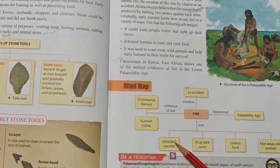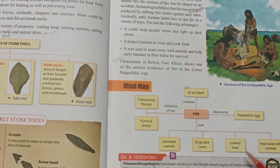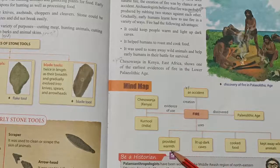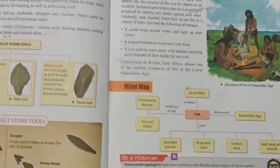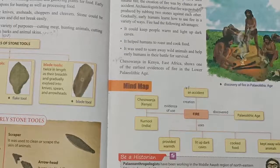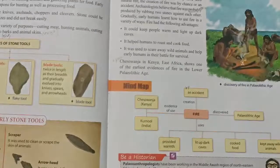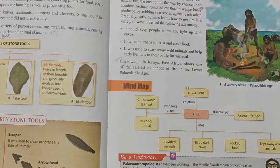To summarize: fire provided warmth, lit up dark caves, helped cook food, and kept away wild animals. These were the uses of fire in the Paleolithic age. Today we have read about the Paleolithic age in detail, and in the next video we will study about the Mesolithic age. Thank you, have a nice day.